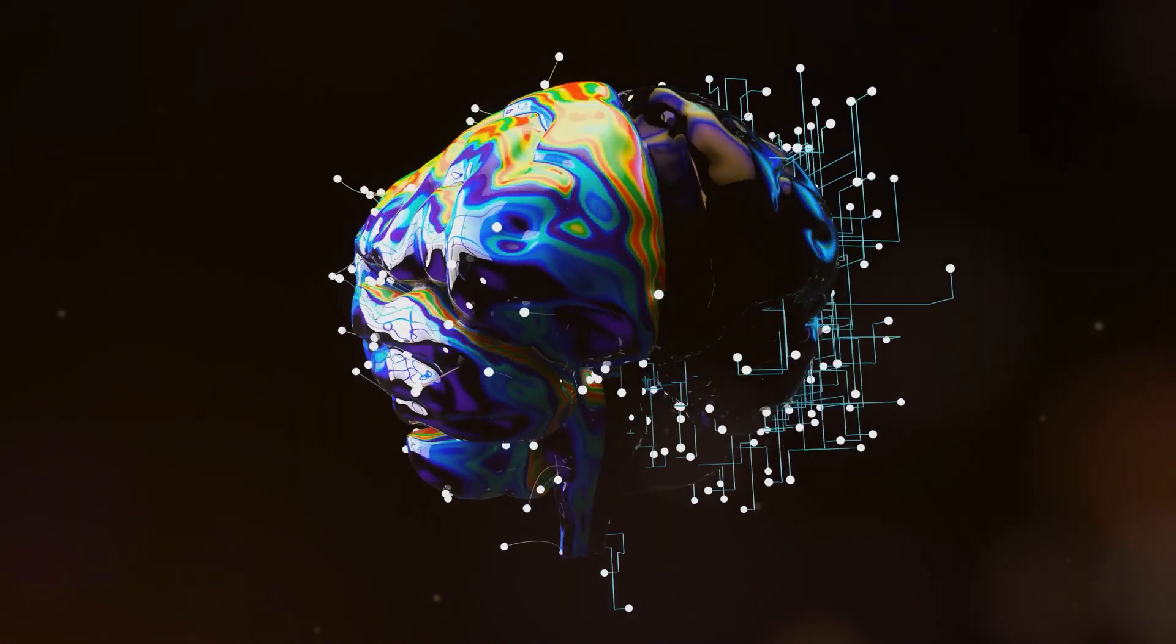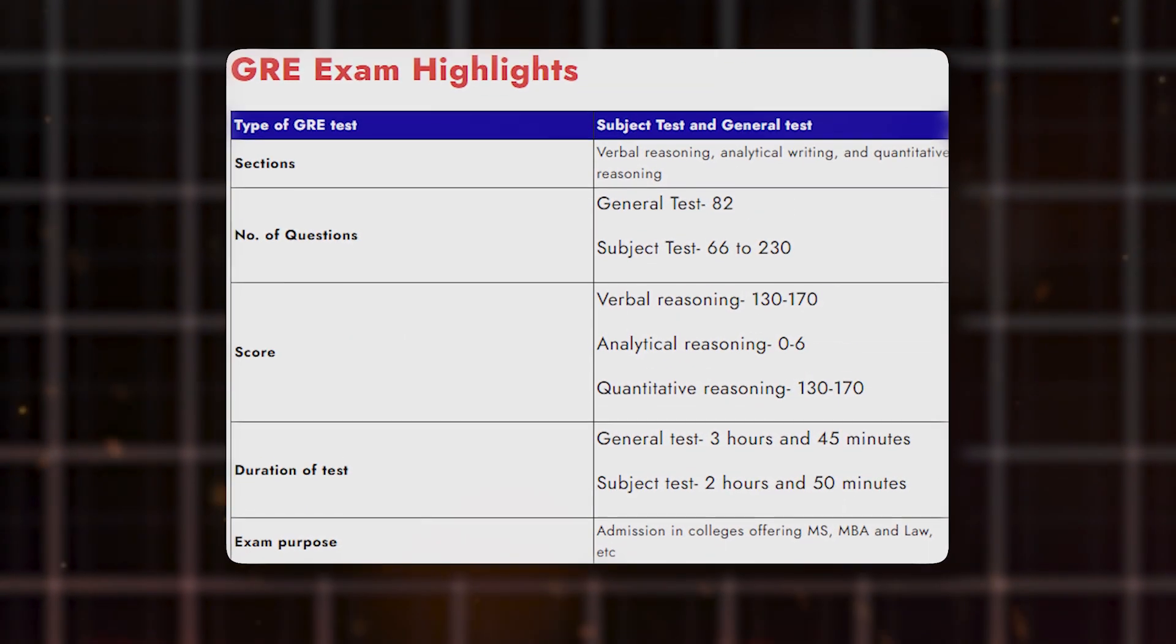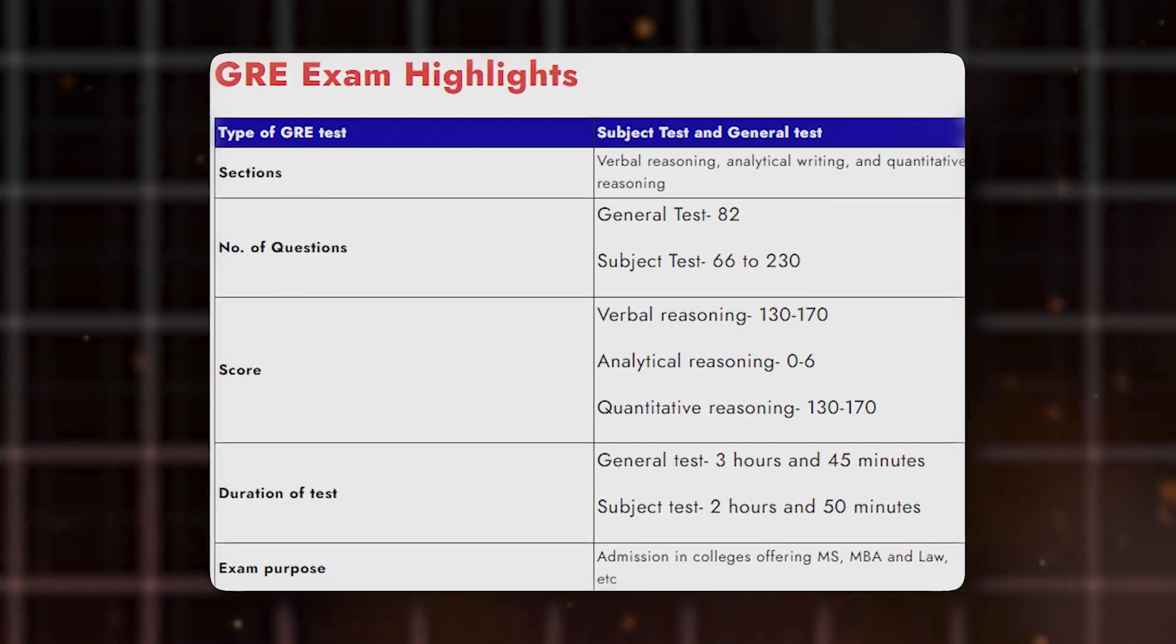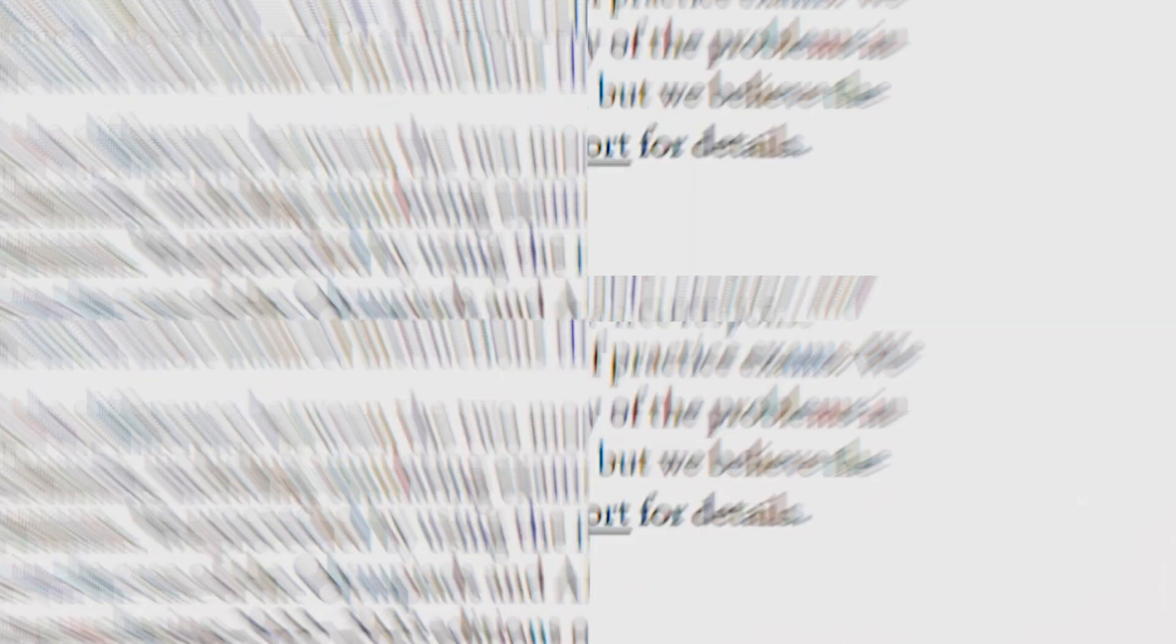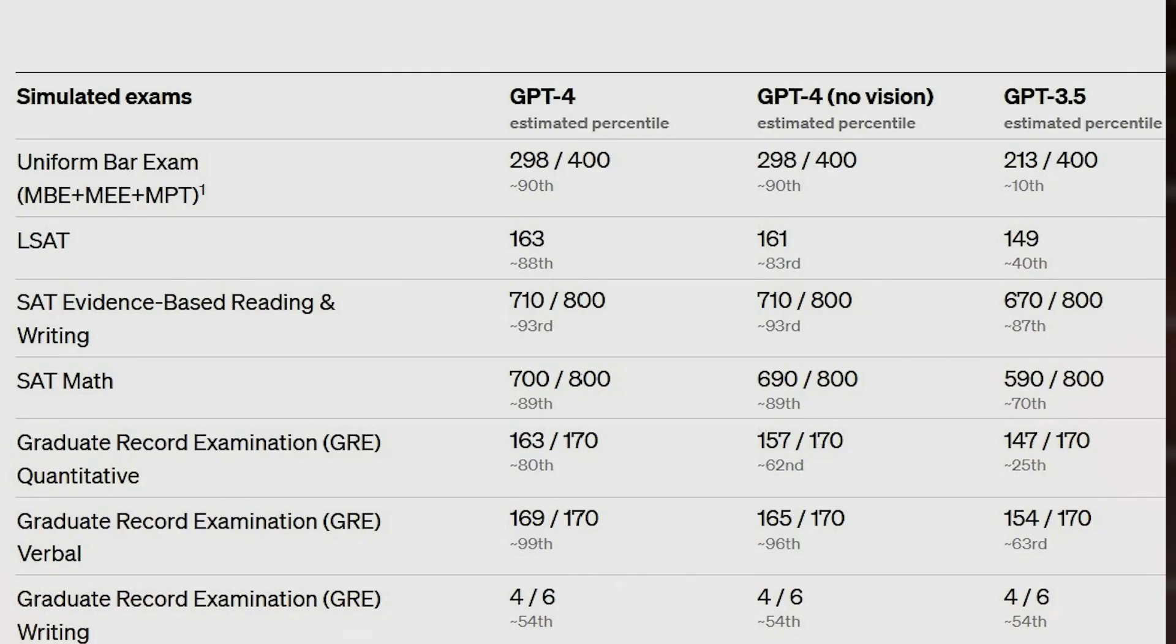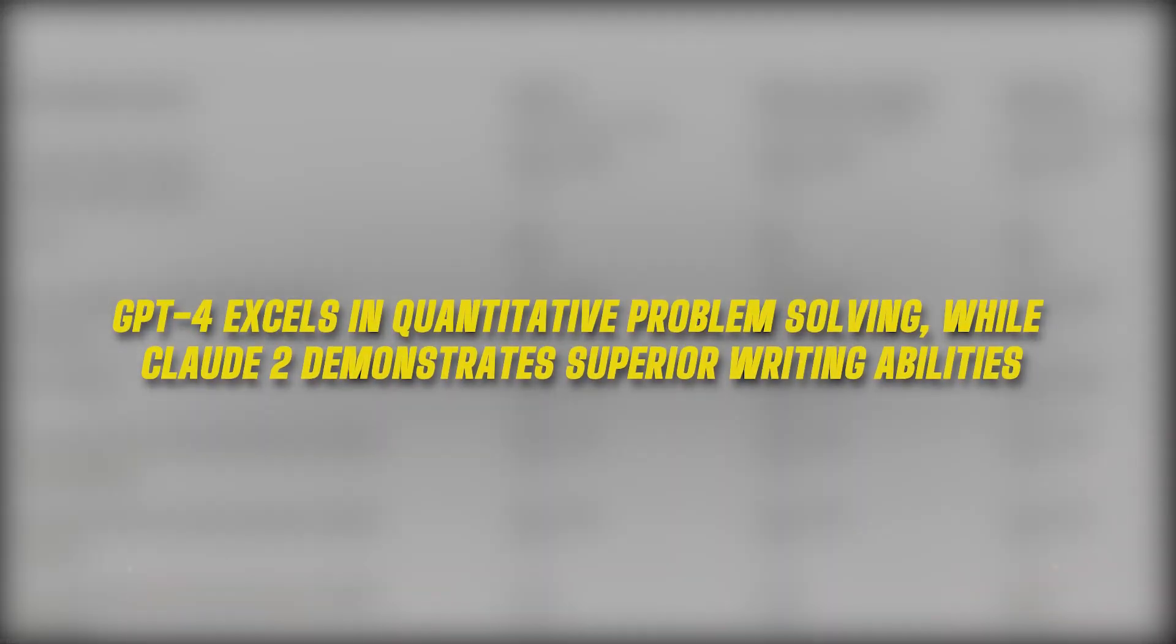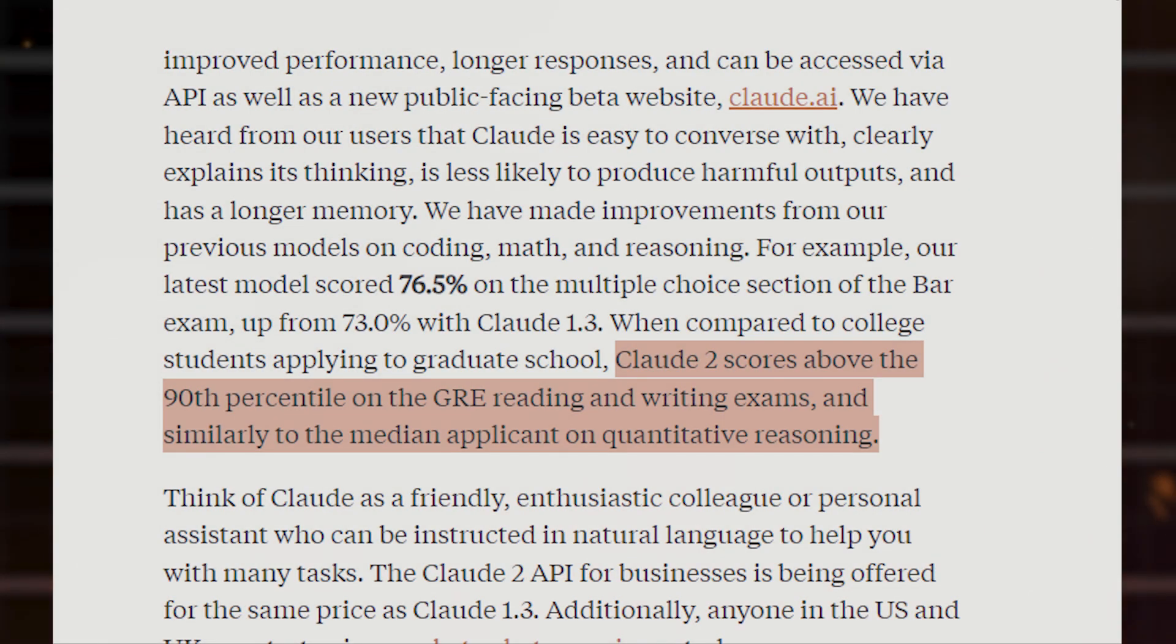To assess both, Anthropic had Claude 2 take the graduate record examination, which is a series of tests in verbal, quantitative, and analytic writing skills commonly used in the admissions process for graduate programs at universities in North America. GPT-4 had previously taken this exam as well. The discrepancy in their GRE scores indicates that GPT-4 excels in quantitative problem solving, while Claude 2 demonstrates superior writing abilities.